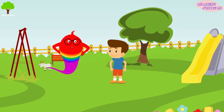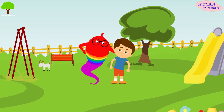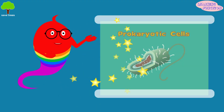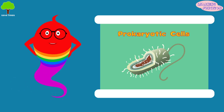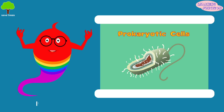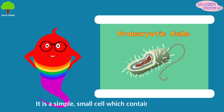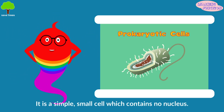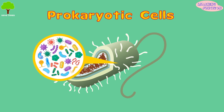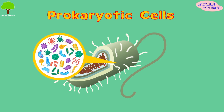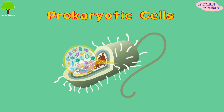Let's learn about each type one by one. Prokaryotic cells: the prokaryotic cell is a simple, small cell which contains no nucleus. Organisms made from prokaryotic cells are very tiny, such as bacteria.